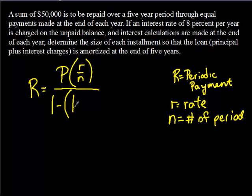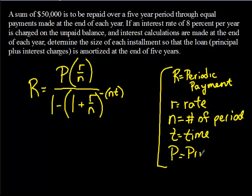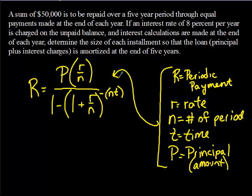The denominator is a little more tricky — there's more stuff in it. We have 1 minus the quantity of 1 plus r over n — don't confuse this: there are parentheses here, so make sure you follow the order of operations — all raised to the negative n times t power, where t is our value of time. The only variable not yet listed is P, which is our principal, also the amount borrowed.